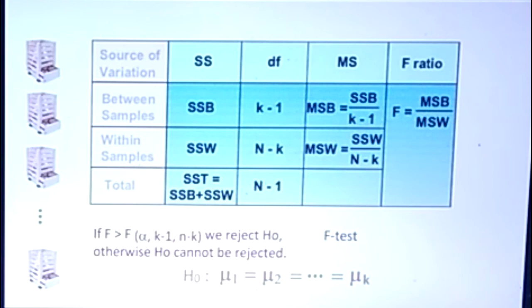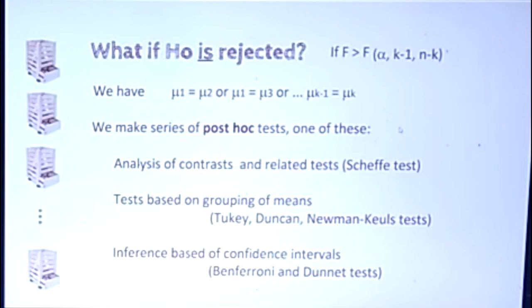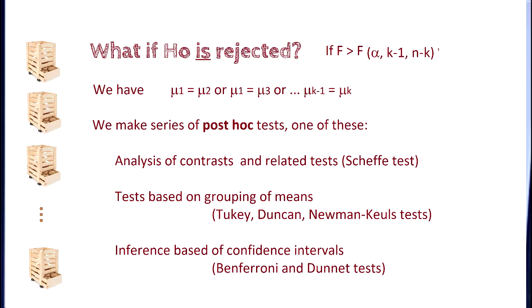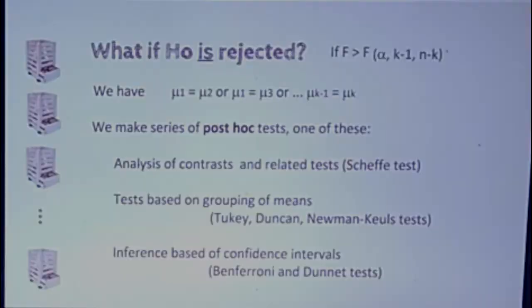What if H0 is rejected? If it is rejected, then we have some difference between them. We make series of post-hoc tests. One of these, analysis of contrast and related tests. For example, Scheffe test. Test based on grouping of means: Tukey, Duncan, Newman-Keuls test. Inference based on confidence intervals. Then we can use Bonferroni and Dunn tests. I'll see you next time.